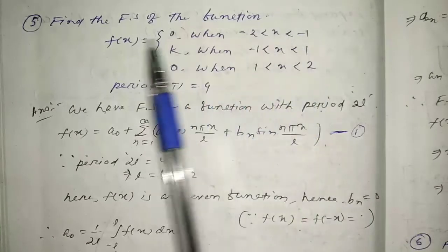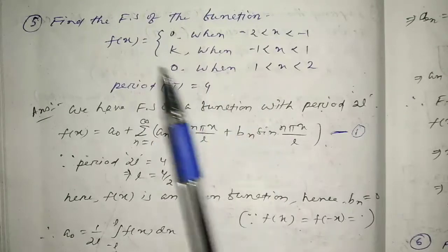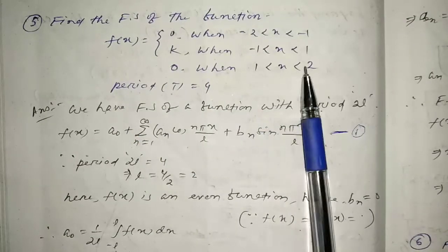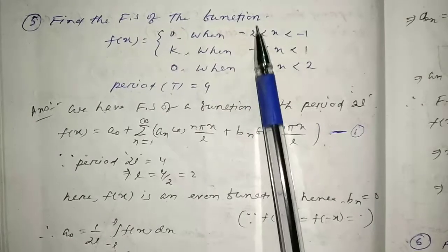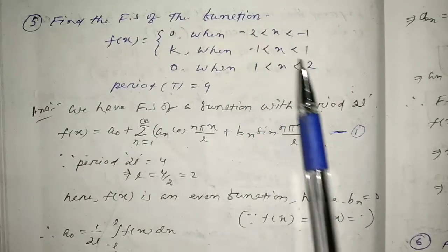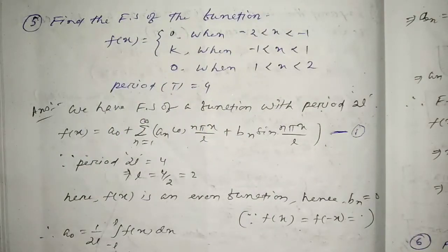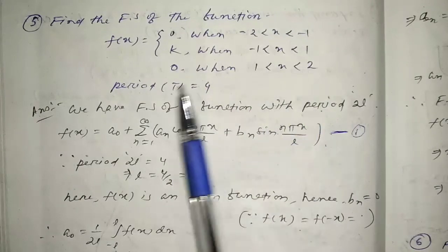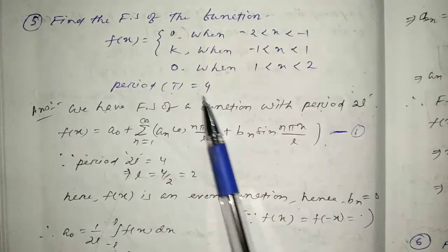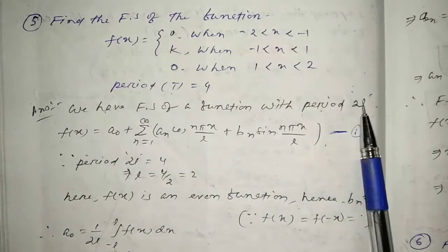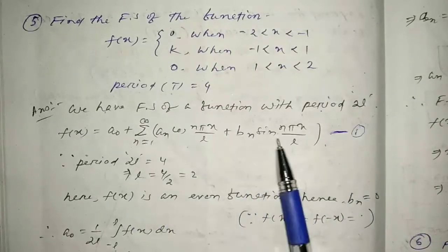The function value is 0 from x = -2 to -1, equals k from x = -1 to 1, and equals 0 from x = 1 to 2. The interval is -2 to 2, which means the period is 4. So the period 2L corresponds to this interval.